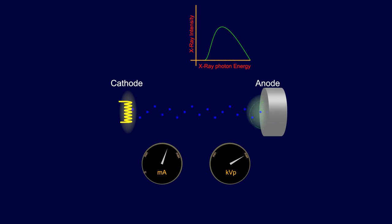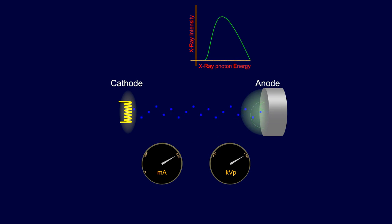The animation shows the KVP at a fixed maximum speed. As the MA gradually increases, the amount of electrons gradually increases. The graph shows that this increase will increase the total intensity of the X-ray beam.